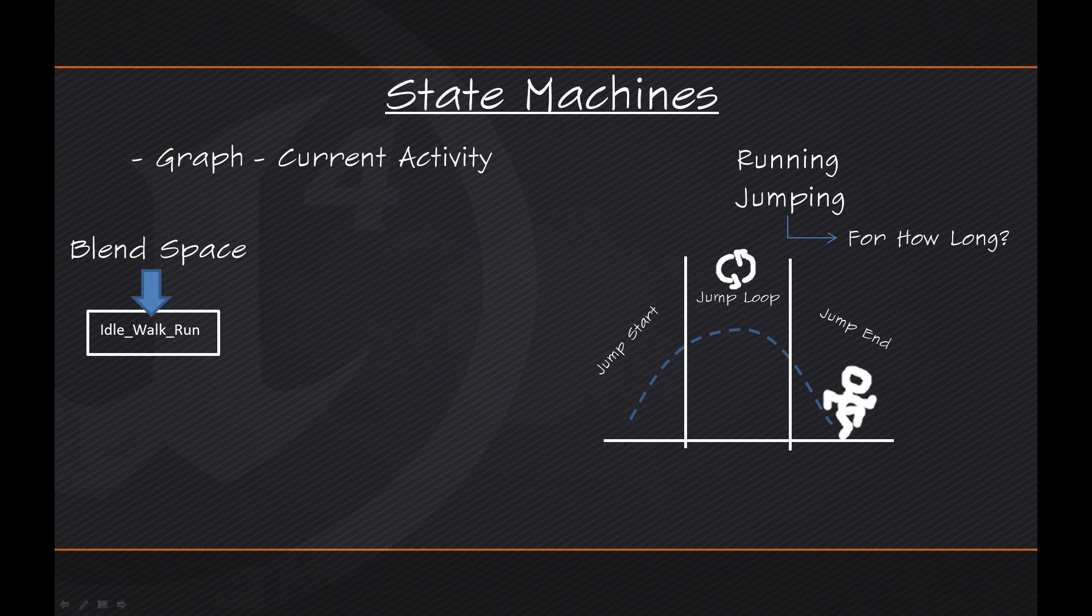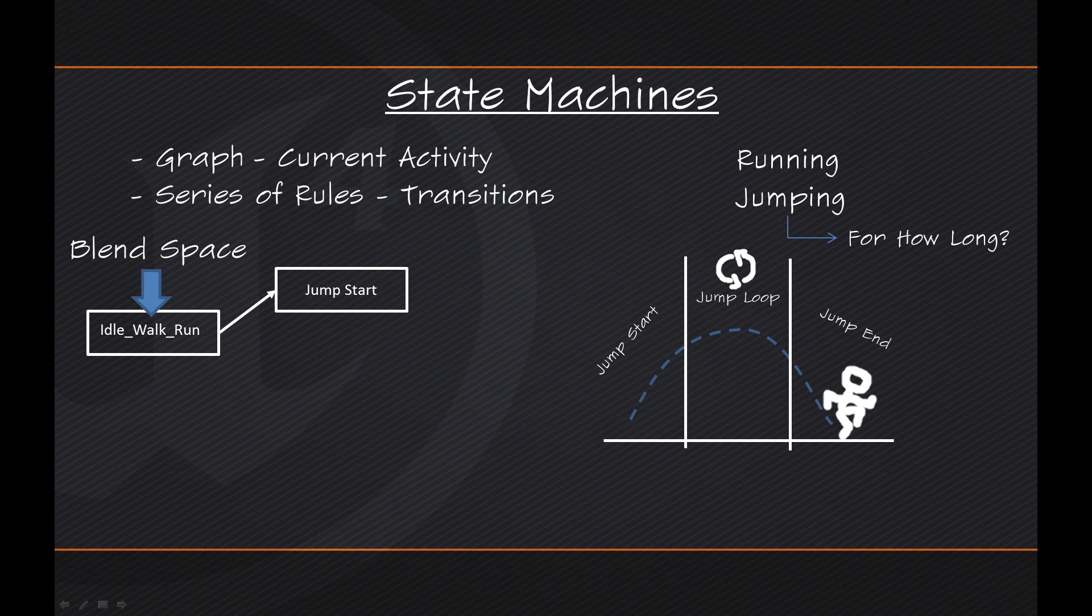Alright, so now with that in mind, we know that a State Machine is a graph of our Character's Current Activity, but there is a little bit more to it than that. It is also a series of rules called Transition Rules. These control how you get from one State to another. So, we are going to say for instance, have another State here and we are going to call this State the Jump Start. The Character could at any point go from Idle, Walk, Run to that Jump Start State. So, the Behavior moves in this direction, but how do we get there? Under what circumstances would he go into Jump Start? Well, we will simply ask the game a question. Let me kill this Blend Space here to make more room as well. Our question to the game is going to be, is the Character in the air, yes or no? If the Character is in the air, then we go ahead and start playing the Jump Start animation.